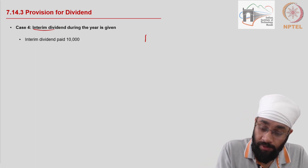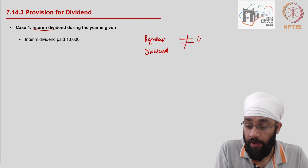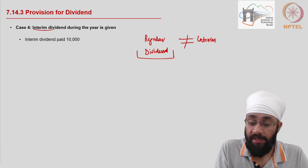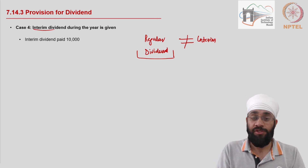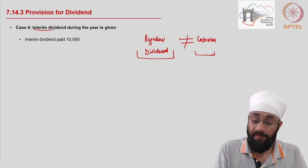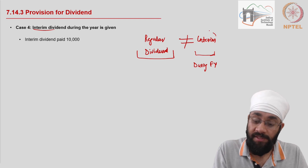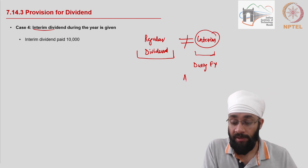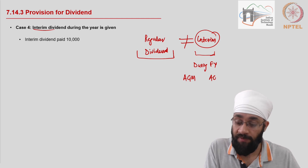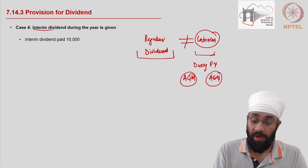There is one more case: interim dividend, which is different from the regular dividend. A regular dividend is typically proposed at the end of the financial year by the board, approval is granted, and then payment is made. Interim dividend refers to a dividend paid during a financial year. It is called interim because annual general meetings are held at the end of the year — that is where the regular dividend is decided.